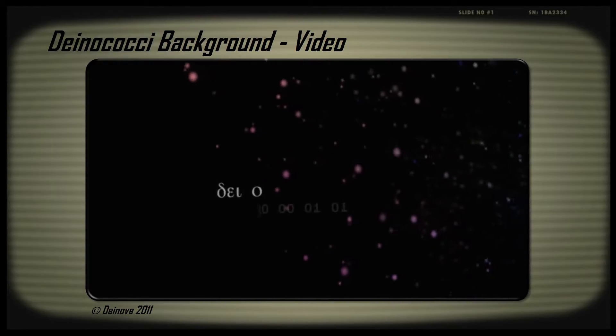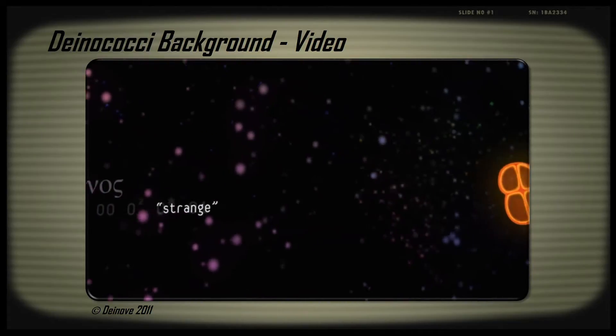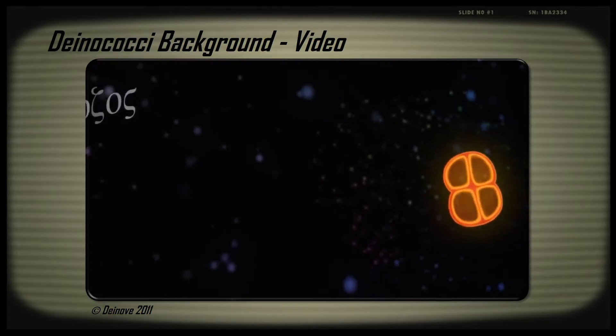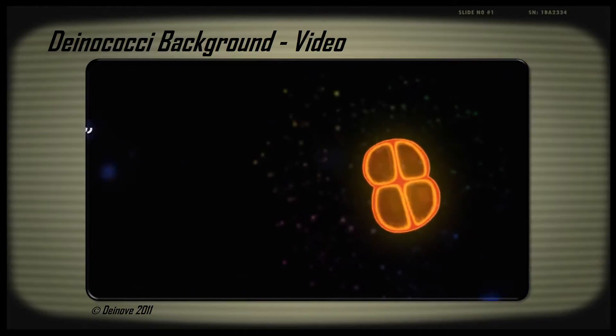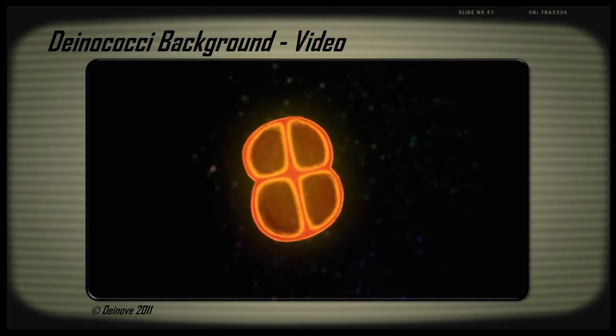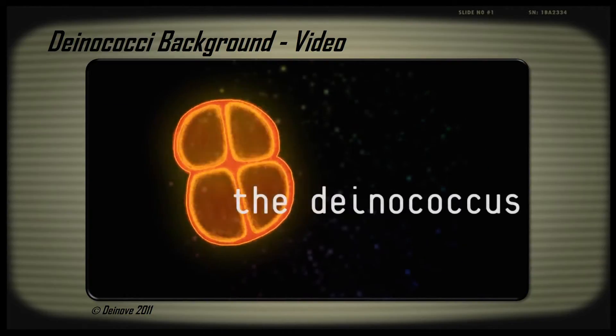We'll start with a background video on the Deinococcus family. The Deinococcus appeared on Earth billions of years ago. This ancestral life form managed to survive the extreme conditions during the initial stages of the planet's formation – desiccation, heat and radiation.